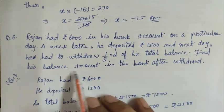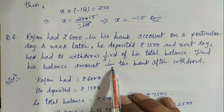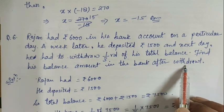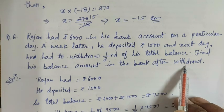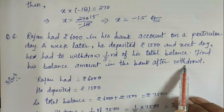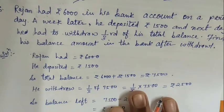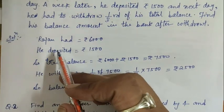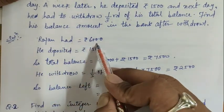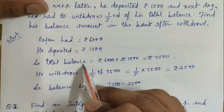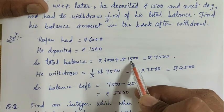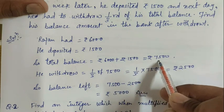Second question: Rajan had ₹6000 in his bank account on a particular day. A week later, he deposited ₹1500 and next day he withdrew one third of the total balance. Find his balance amount in the bank after withdrawal. Rajan had ₹6000, he deposited ₹1500, so total balance is 6000 + 1500 = ₹7500.